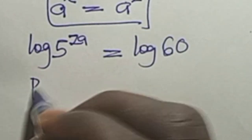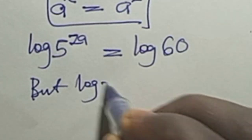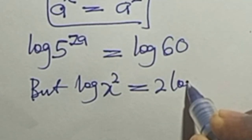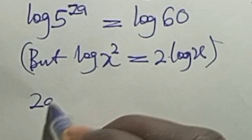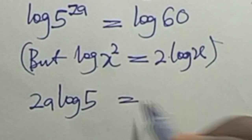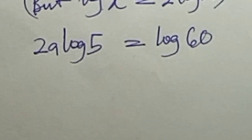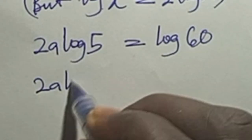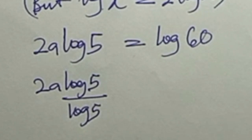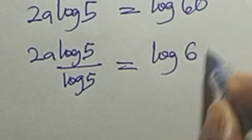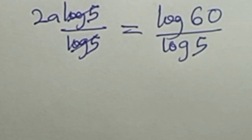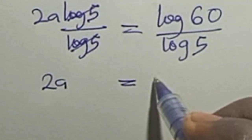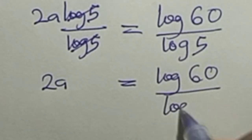But log x raised to power 2 is the same as 2 log x — the power comes down to multiply the log. So here we have 2a times log 5 equals log 60. Dividing both sides by log 5 gives 2a equals log 60 over log 5.